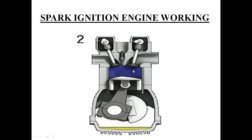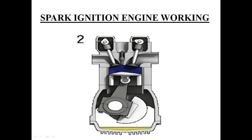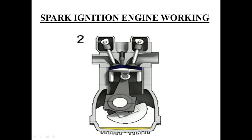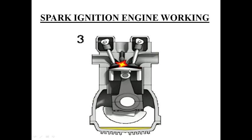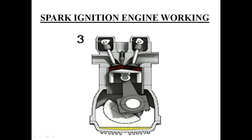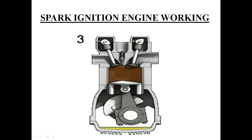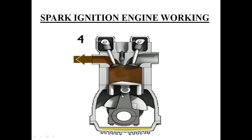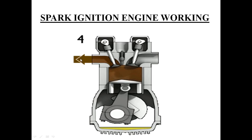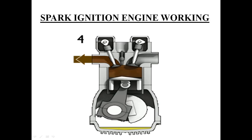In summary, the spark ignition engine cycle consists of: first, induction where air-fuel mixture enters through the inlet valve; second, compression; third, the power stroke where the piston moves to BDC; and fourth, the exhaust stroke where the piston moves from BDC to TDC. The cycle then repeats continuously.